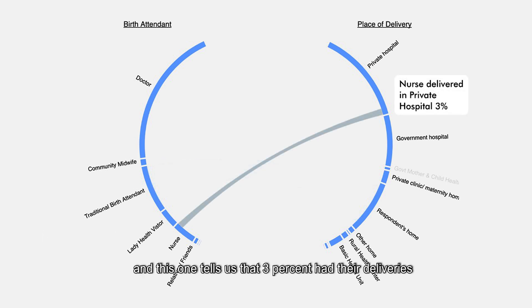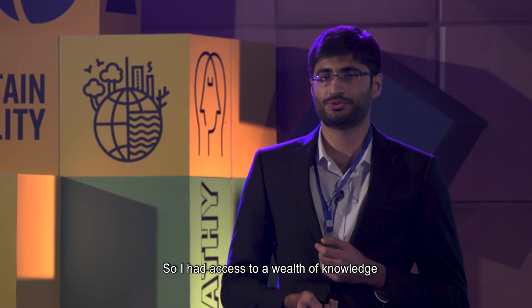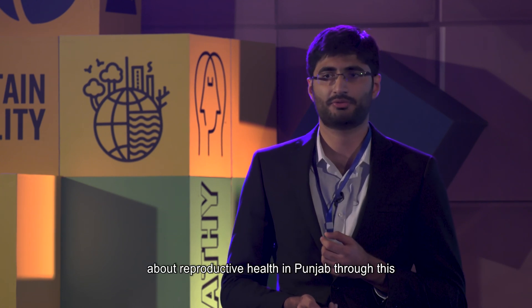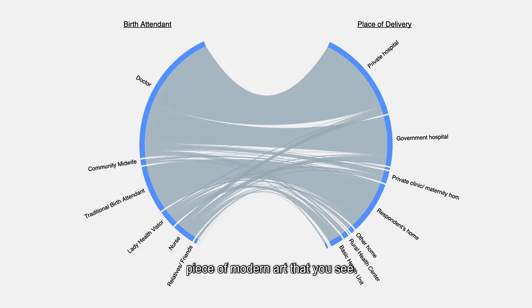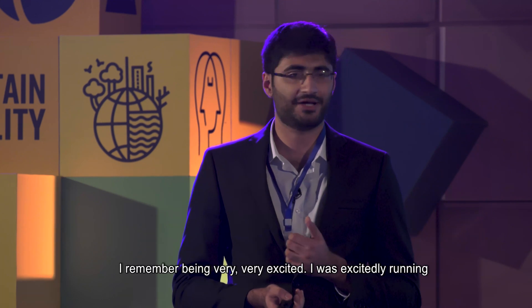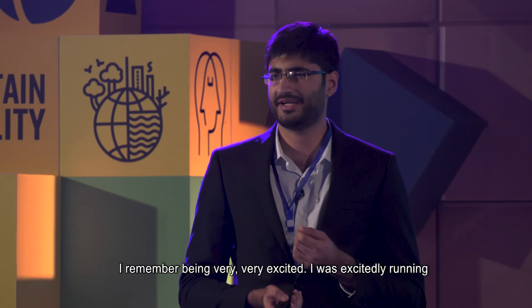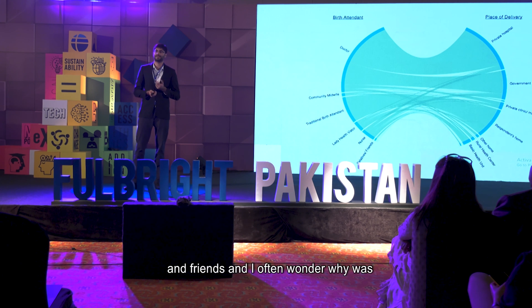Another ribbon tells us that 3% had their deliveries in a private hospital and were helped by a nurse. So I had access to a wealth of knowledge about reproductive health in Punjab through this piece. And I remember when I made this, I was very, very excited and proudly showing it to my family and friends.